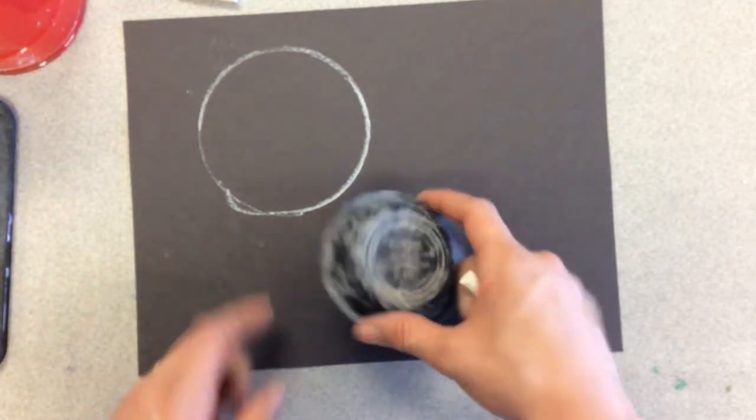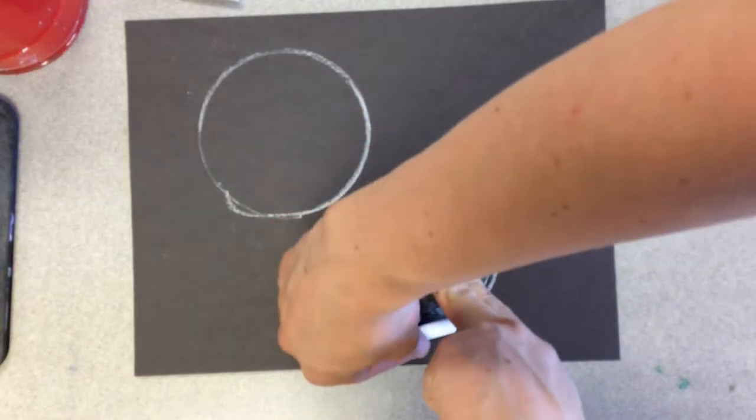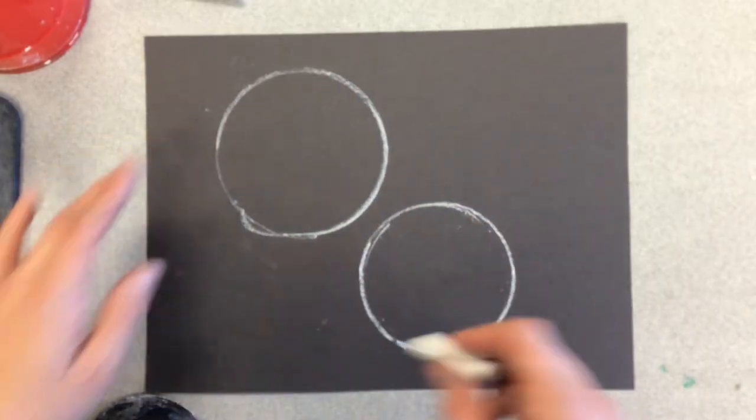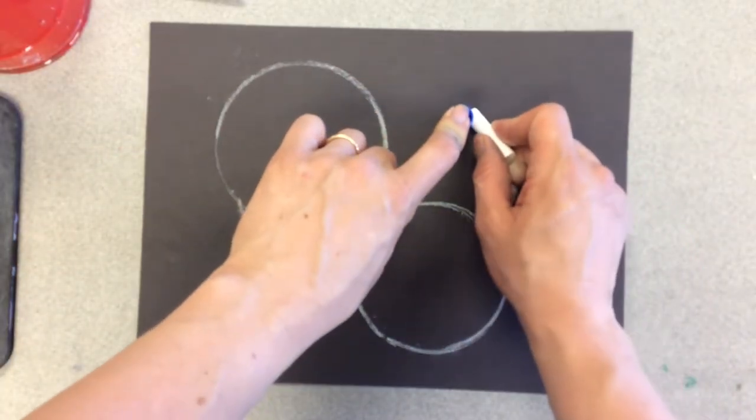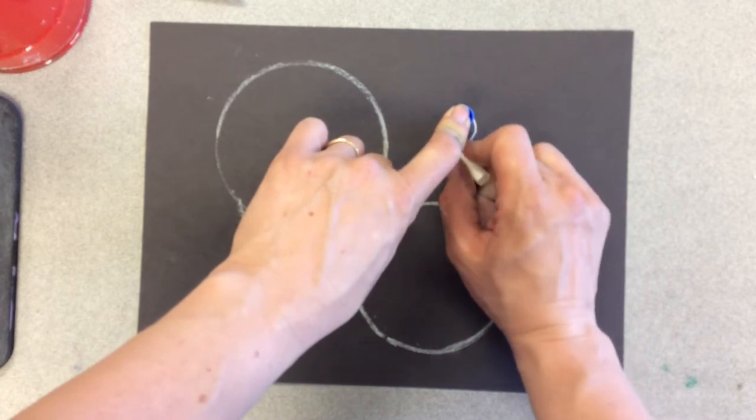I want to get several different size circles so I'm using different tracer sizes. I want to press pretty hard when I'm tracing and I'm going to do a few small bubbles holding little lids.